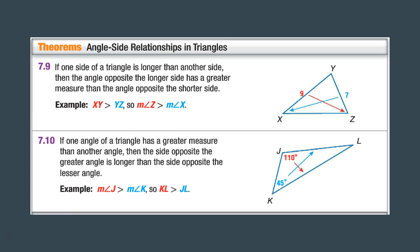Angle-side relationships in triangles: if one side of the triangle is longer than another side, then the angle opposite the longer side has a greater measure than the angle opposite the shorter side. So we're saying that I know that XY is 9 and YZ is 7. Well, 9 is greater than 7, which means that this angle Z is going to be greater than this angle X, which is opposite across from 7, which is this angle X here. So angle Z is greater than angle X.